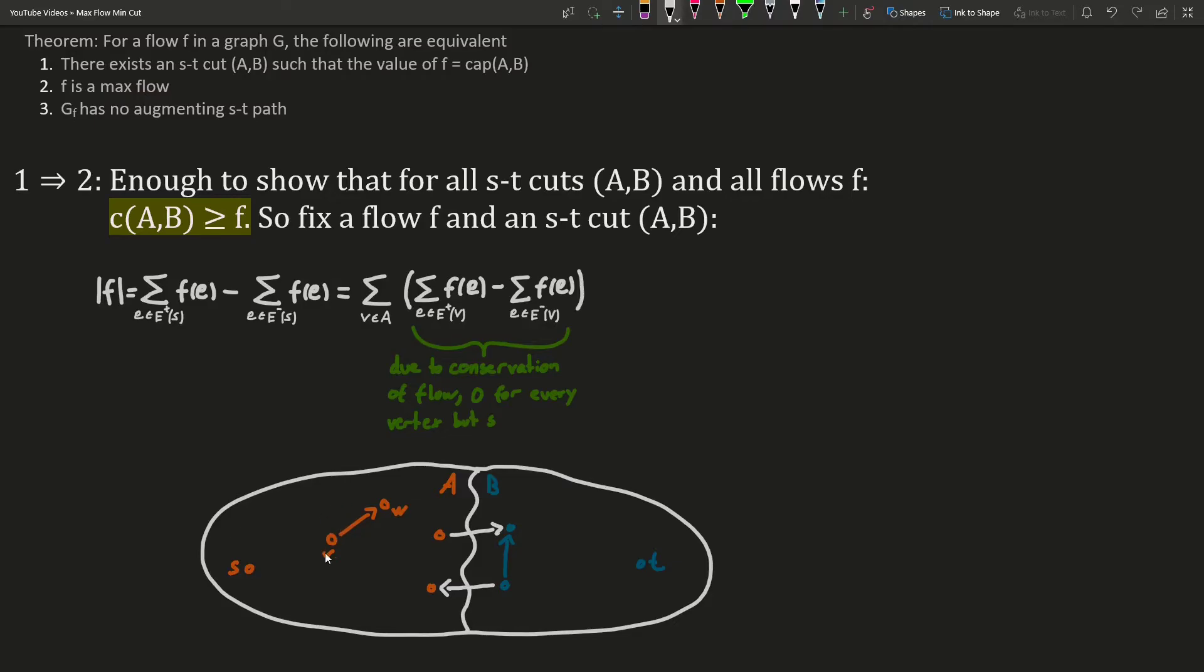Edges with both endpoints in A, such as the orange edge VW, will contribute once positively when we look at V, because it sticks out of V, and once negatively for W, because it sticks into W. So the orange edge will show up twice in the sum, once positively and once negatively, which cancels out in the end.